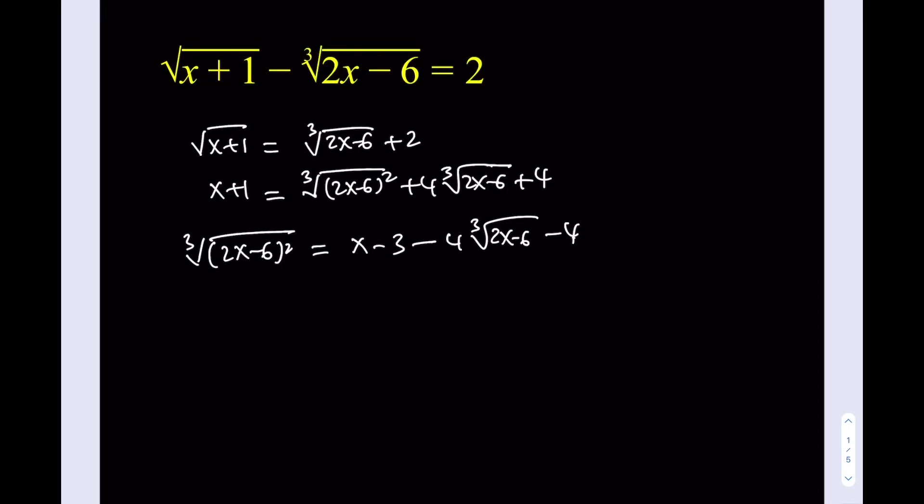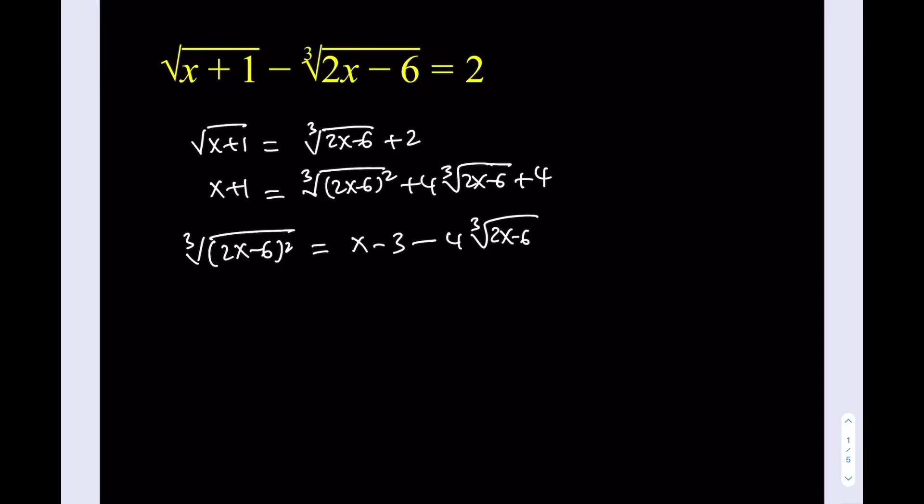One thing to do here is maybe we can just go ahead and isolate one of the cube roots. You can leave it alone on the right-hand side, and everything else I can bring to the left-hand side, but then switch the sides. So what can we do? Well, we do have a cube root, so we can actually cube both sides.